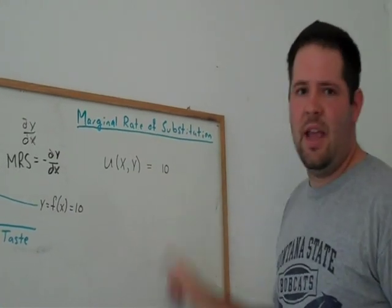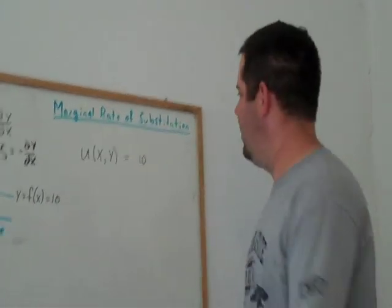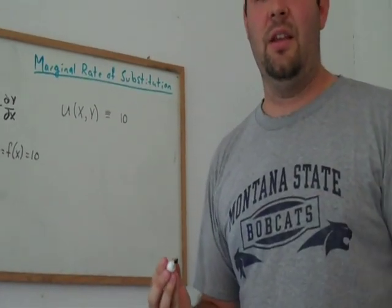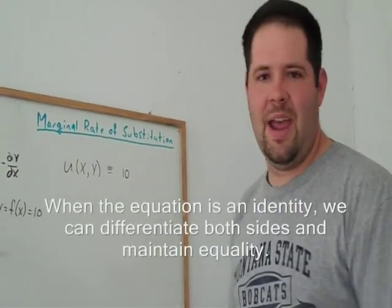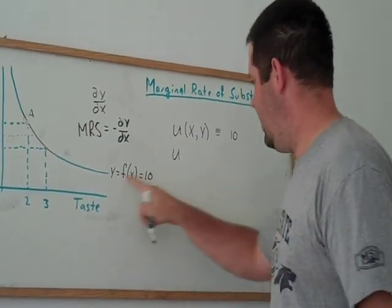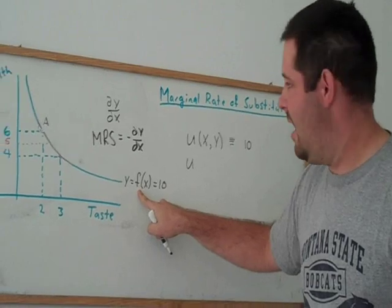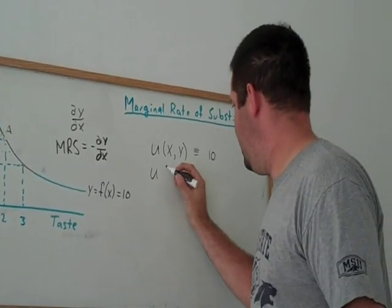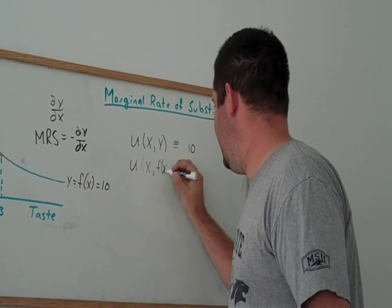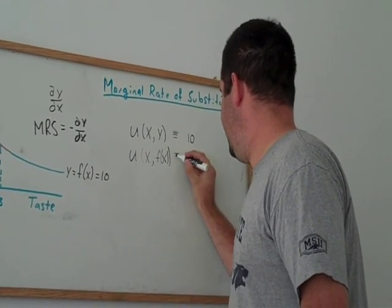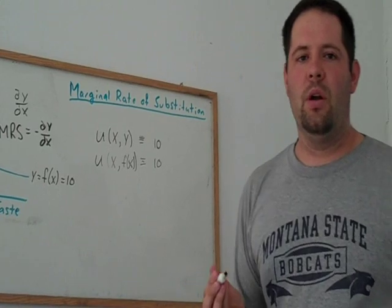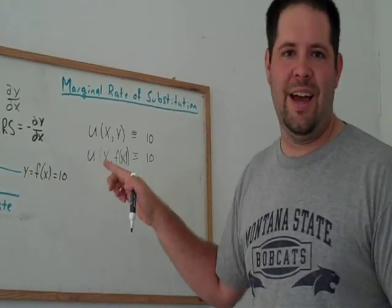And so we can think about taking a total derivative of this expression, really this is an identity, if we think about staying on the indifference curve. So how do we stay on that indifference curve? Well one way to do that is to parametrize the indifference curve by this function f of x.